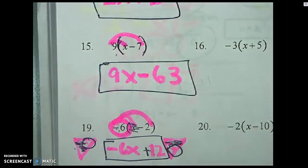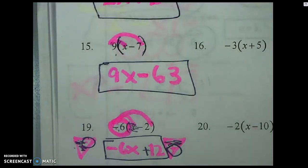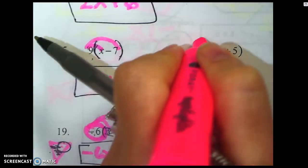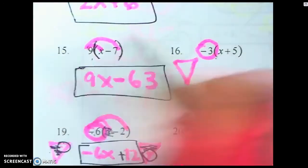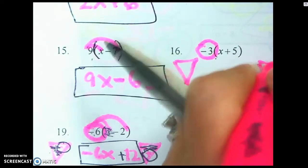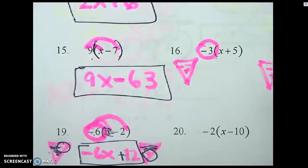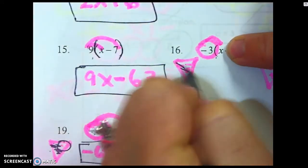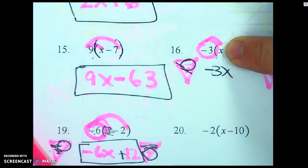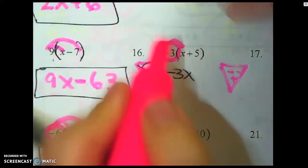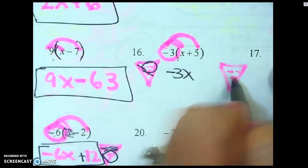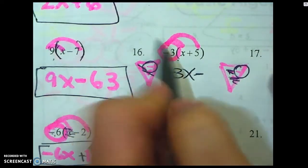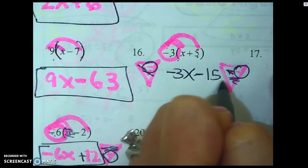Let's do another one — I want to jump to number 16. Whenever you see a negative, not only do you make one triangle, but you make two. A negative times a positive gives negative three x. Then I give the negative to a positive, so that ends up negative. Negative three times positive five is negative 15.